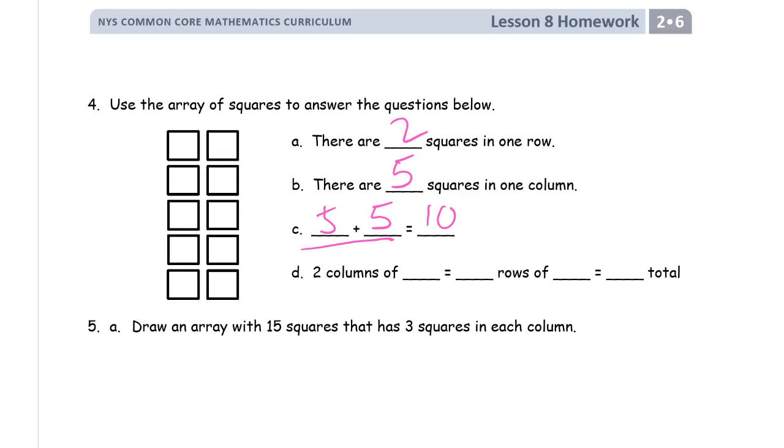So 2 columns of 5, right? Because that's a column of 5, and there's a column of 5. 5 is the same as rows of how many rows of 2? 5 rows. I'll do this. 5 rows of 2, and they both equal the same 10.